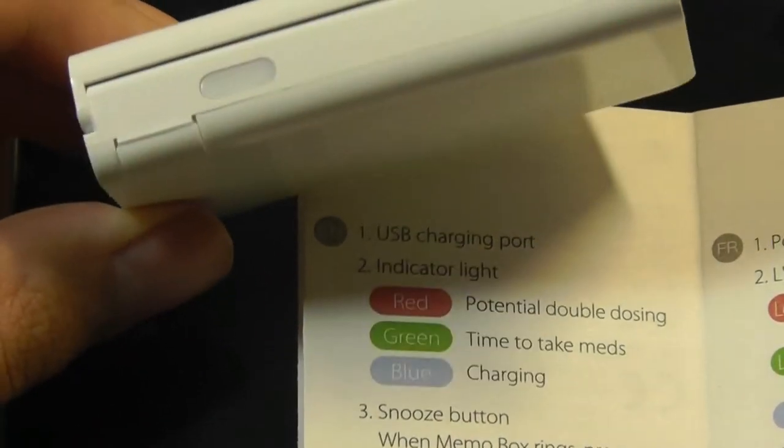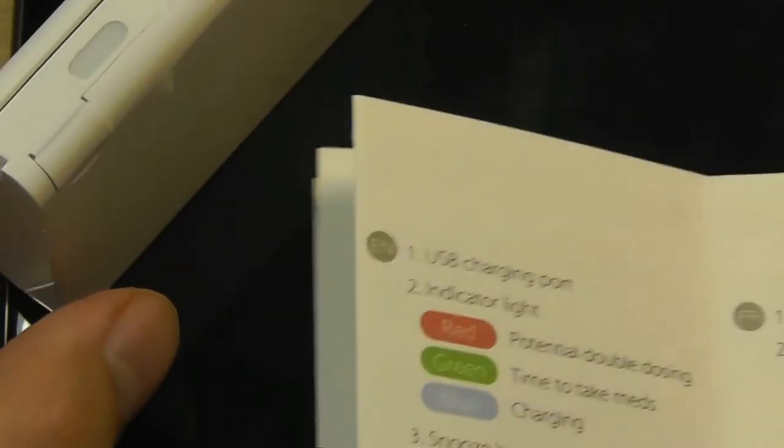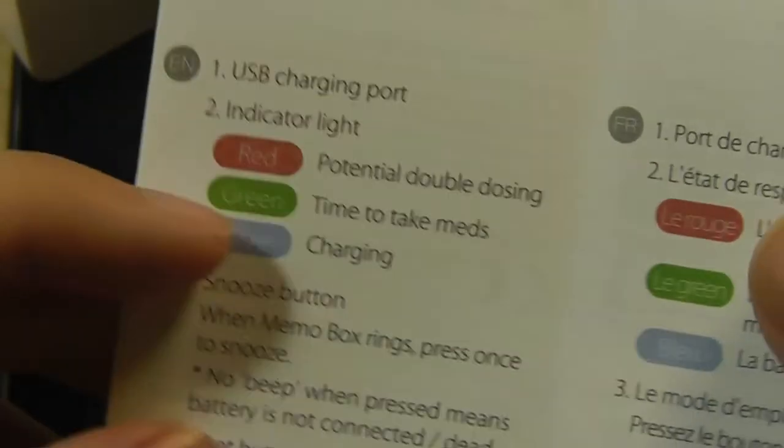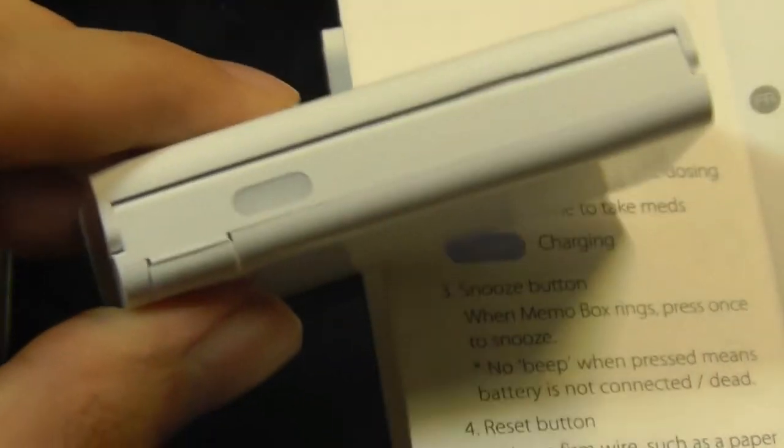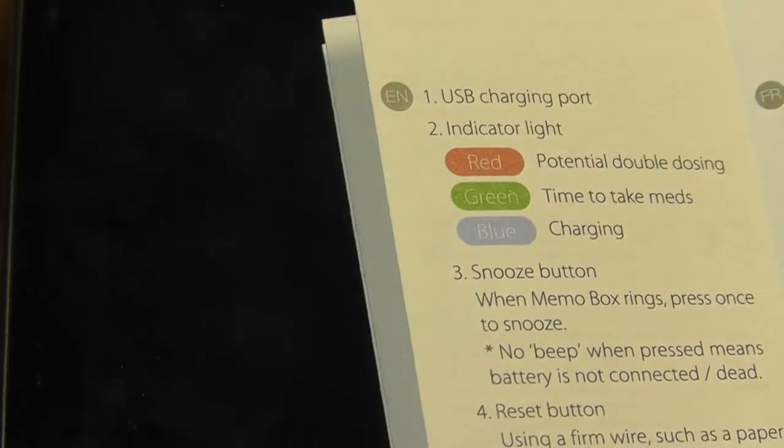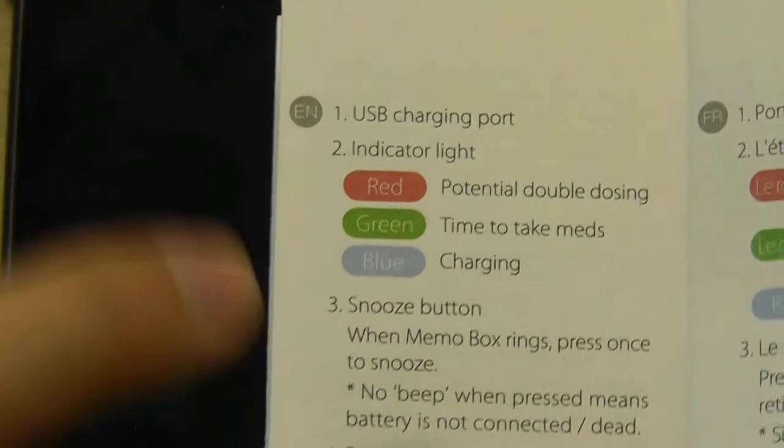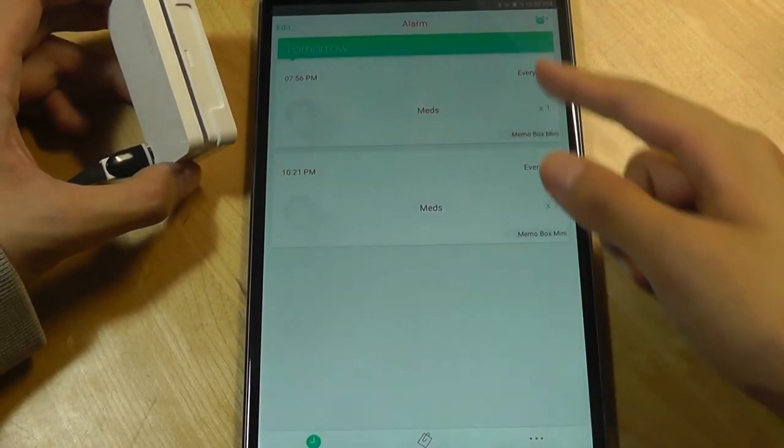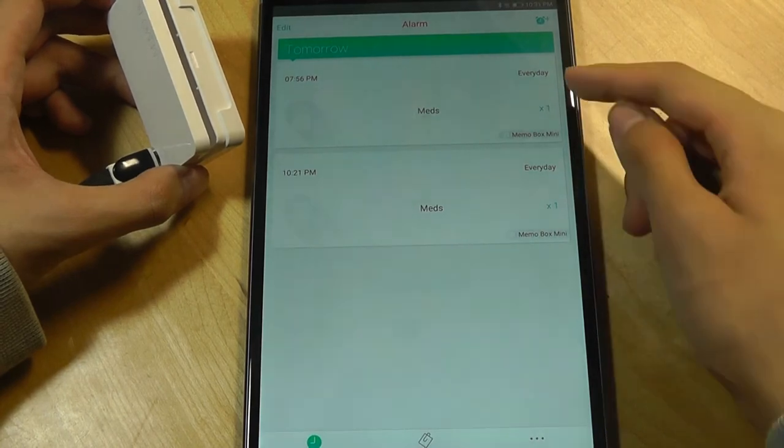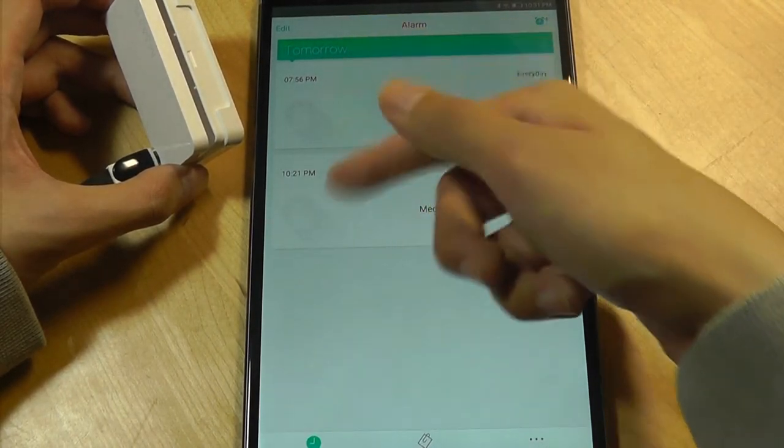Now there are some additional LED indications that I want to quickly discuss. When it's red, it actually tells you that you're potentially double dosing. How it knows that is using the door hinge. If you're opening and closing it too often, it thinks that you've been taking too much meds and it gives you a warning. Finally, if we go into the alarm screen, it also tells us the alarms that are currently on either every day or at a specific time.